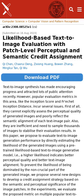Current methods for judging the quality of images created from text have some problems, like not truly capturing how good the image looks or how well it matches the text. This paper introduces a new method that estimates how likely a created image matches a given text, focusing on the most important parts of the image. It does this efficiently with fewer samples.